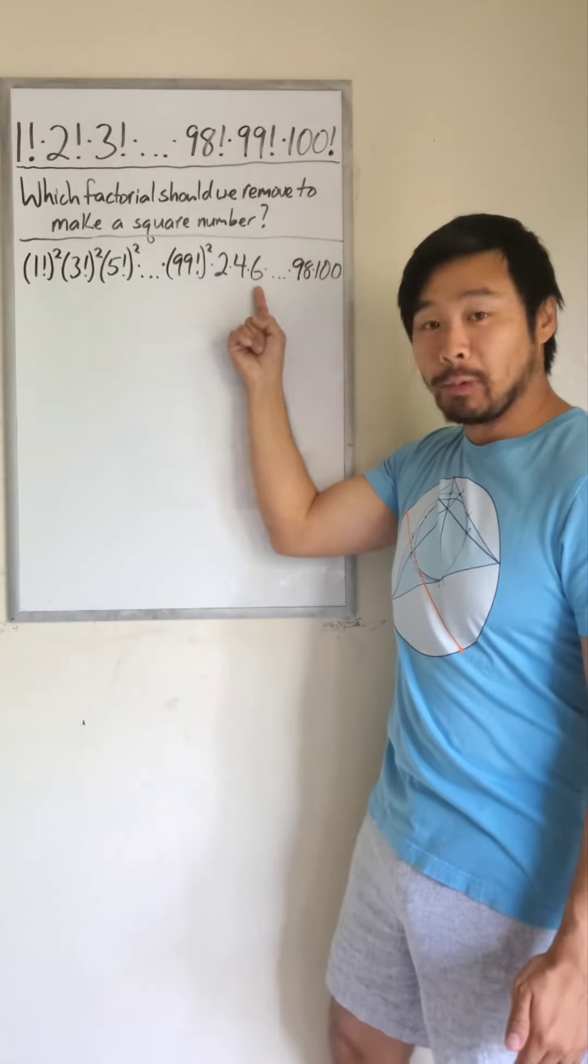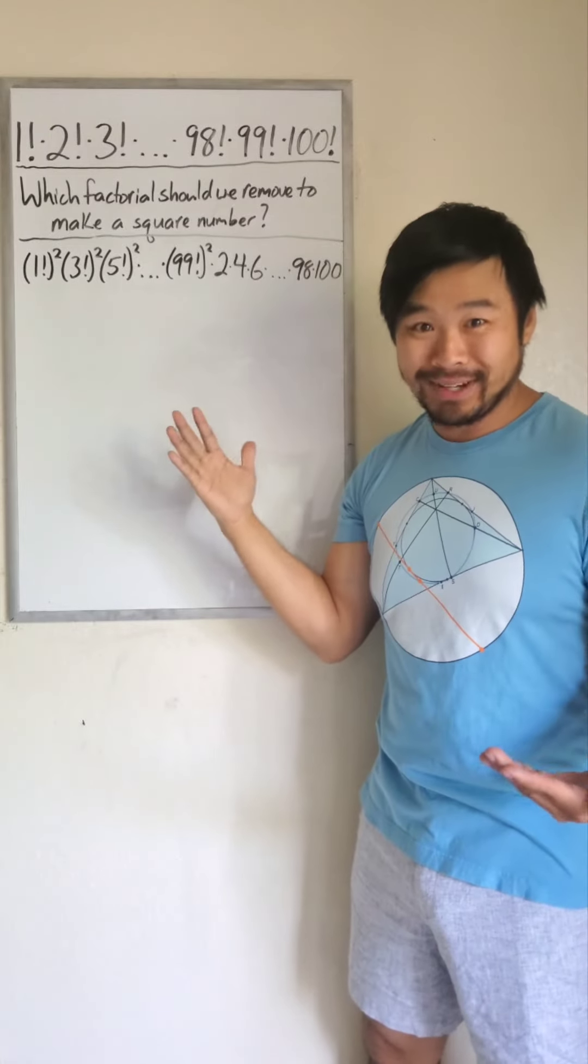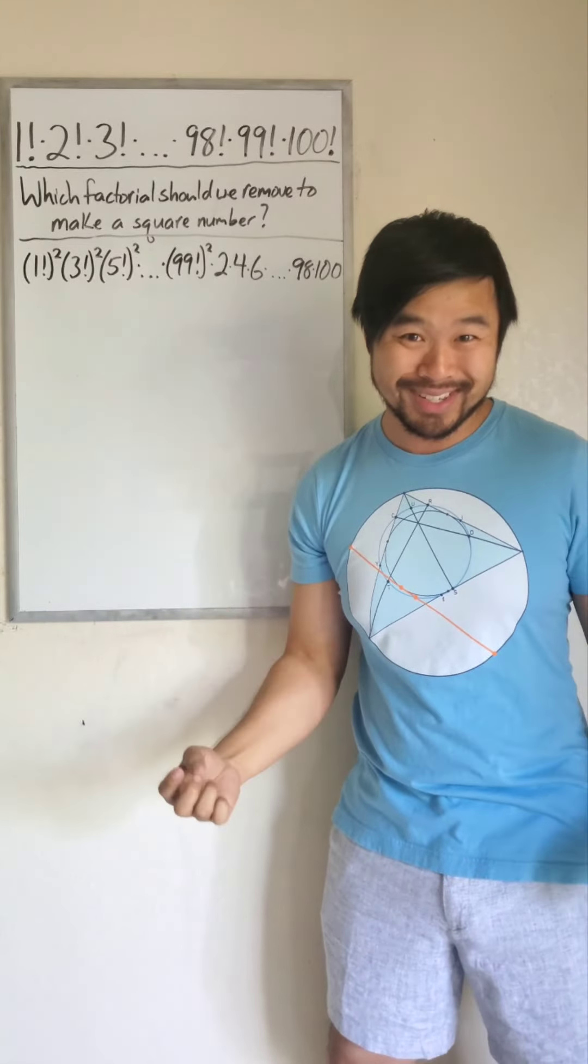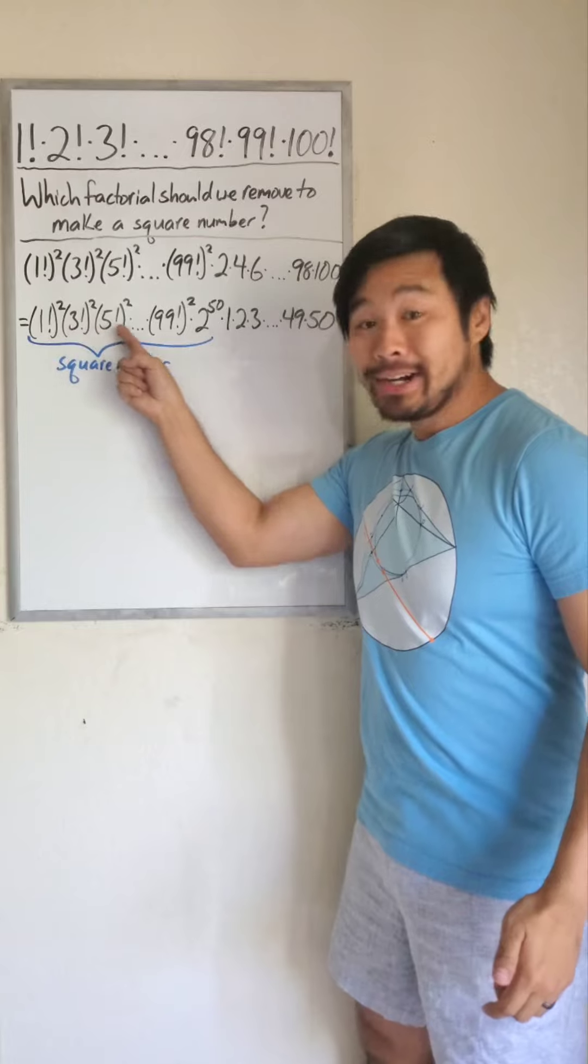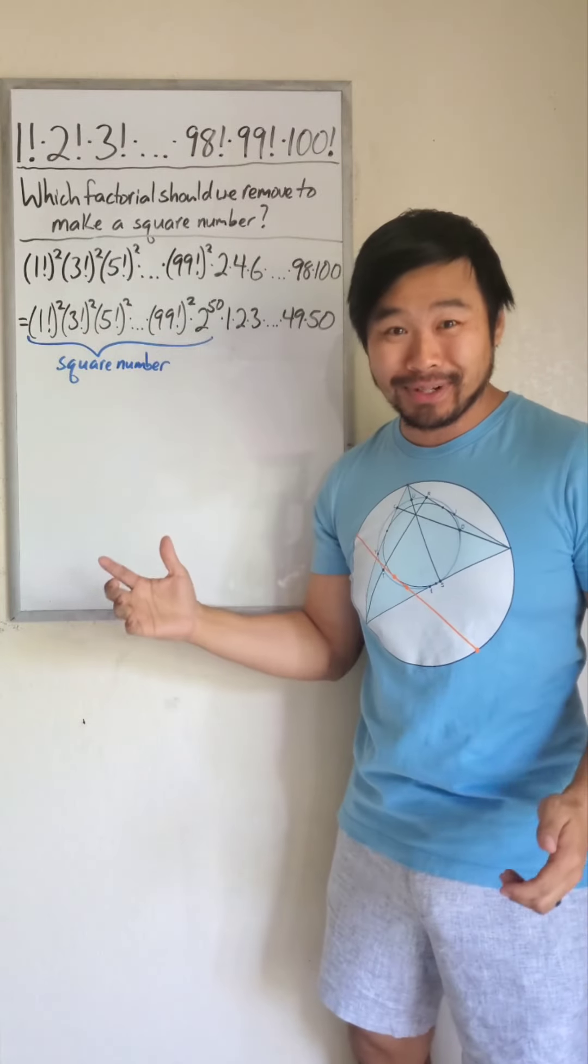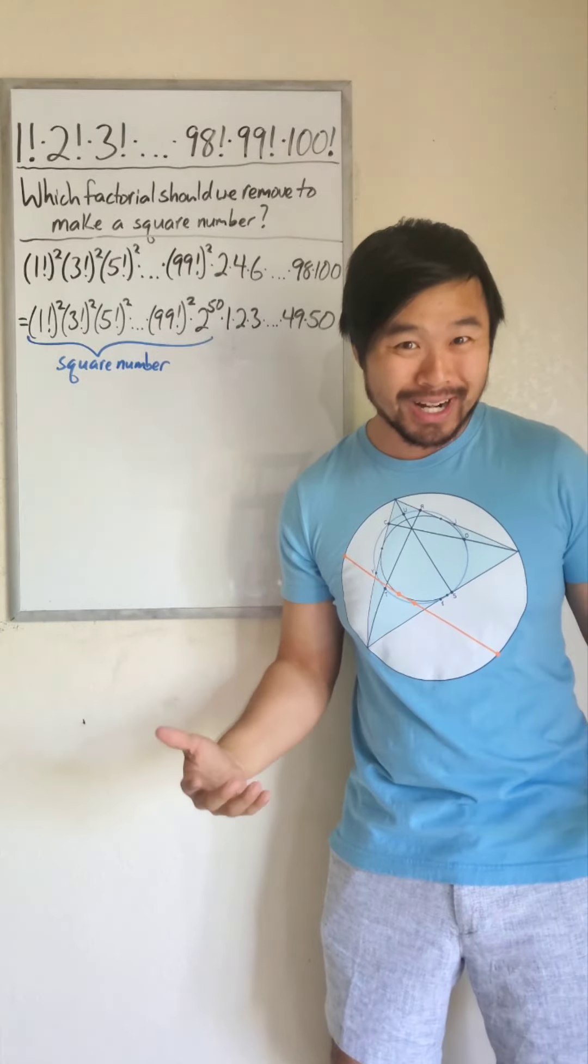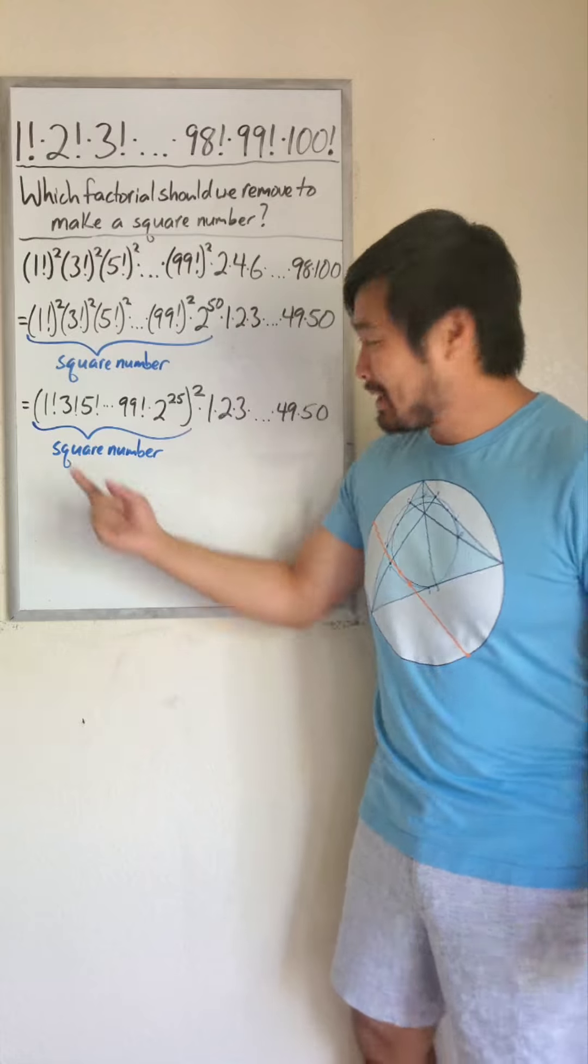Now let's take a look at these multiples of 2. We have 50 of them. So let's factor out a 2 from each of these numbers. Now over here, all of the factors are square numbers. So the product will be a square number, which can be rewritten like this.